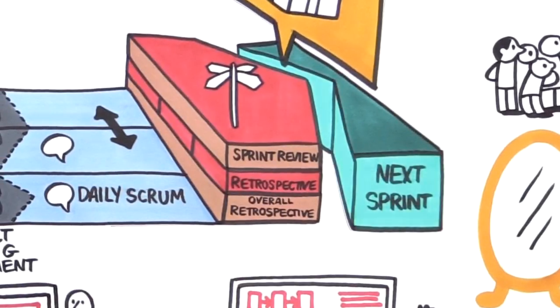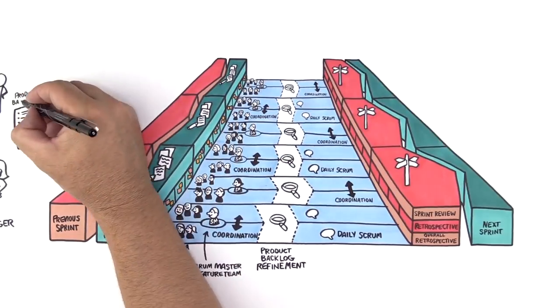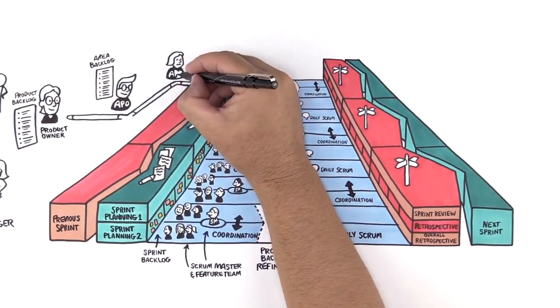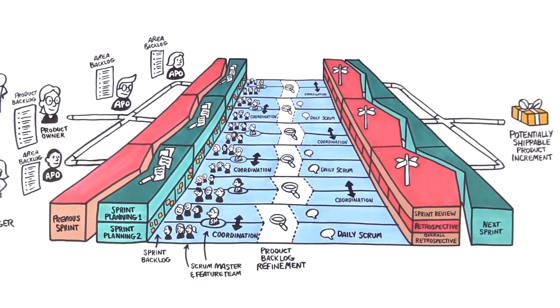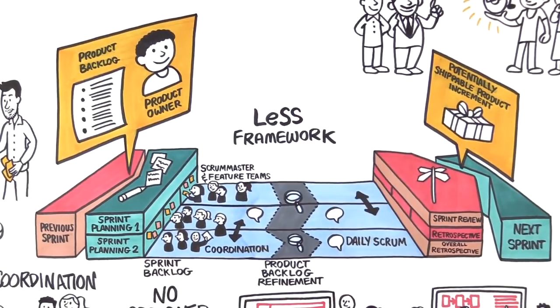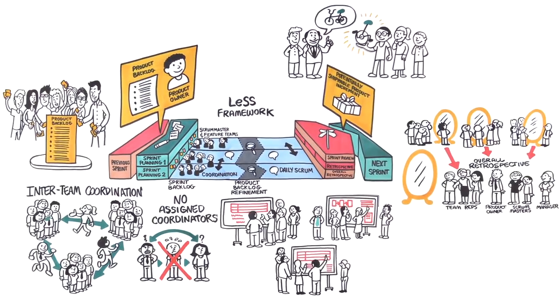Then they repeat the whole cycle, experimenting and making wiser mistakes each time. When we have more than eight teams, we do something similar called LeSS Huge, still targeting one shippable product every sprint. So that's the LeSS framework—just a few rules you can learn in a few minutes.